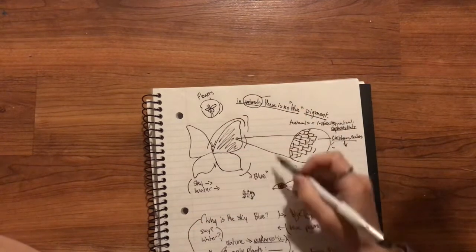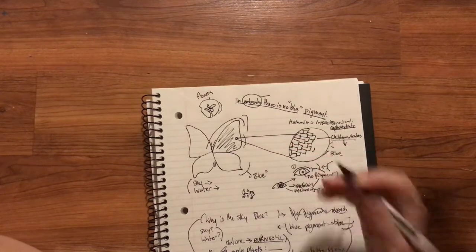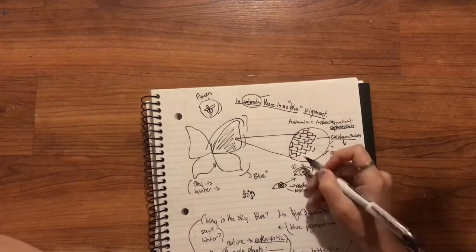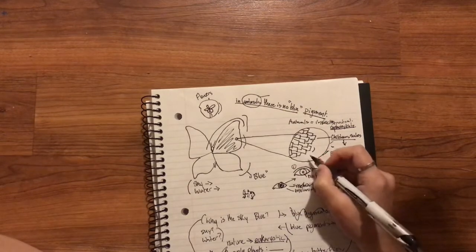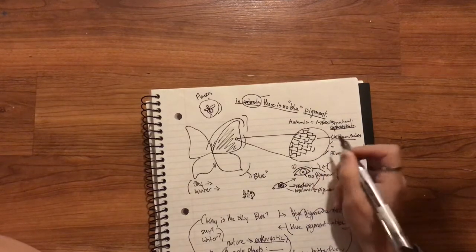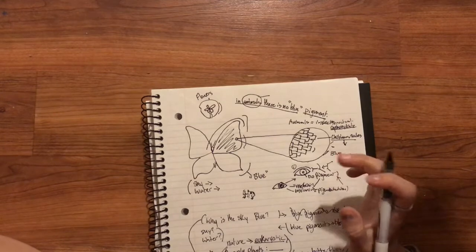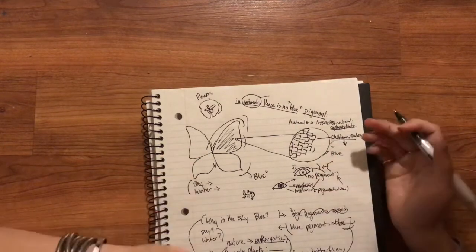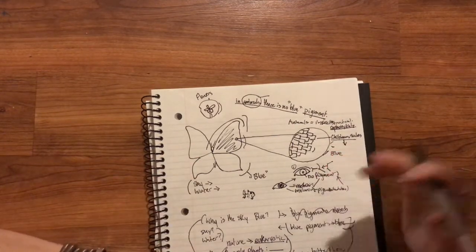When you look at a butterfly and you look at its wings, you see that they're blue. But if you take a look closer, you see that the wings are actually made up of thousands of little tiny chitinous scales. Chitin being a carbohydrate that is a structural component of most animal biology.